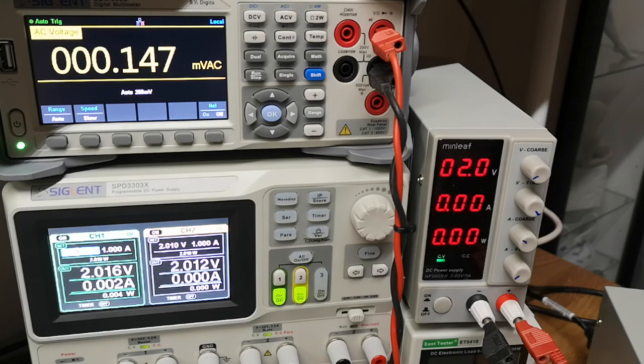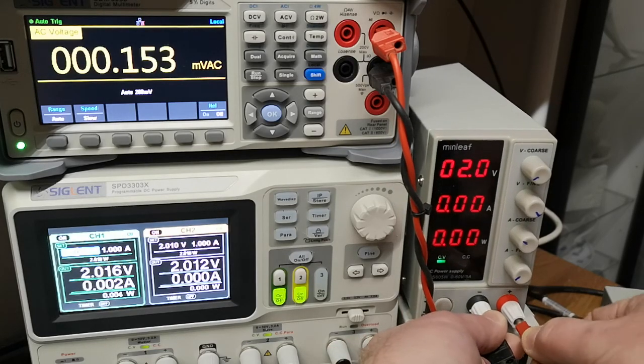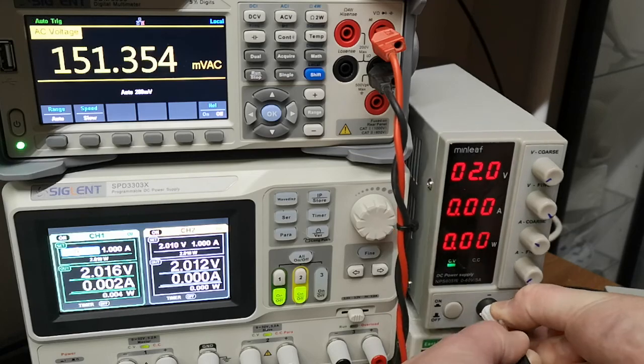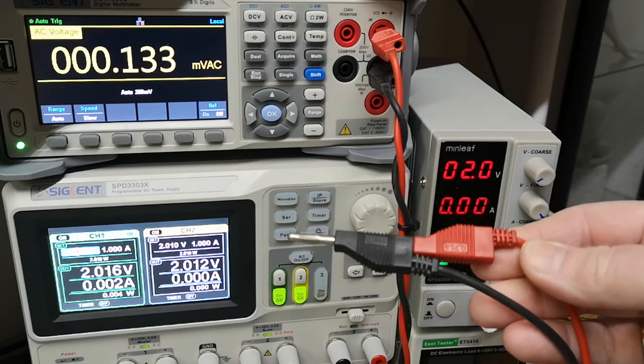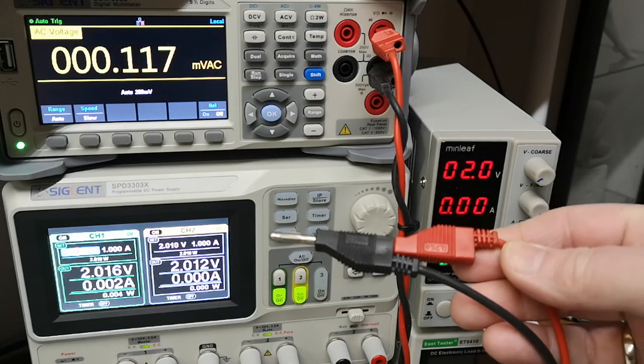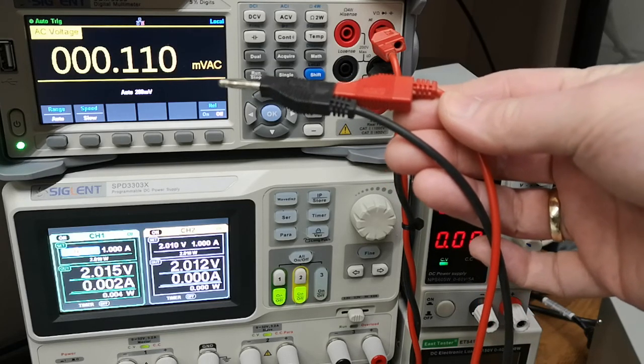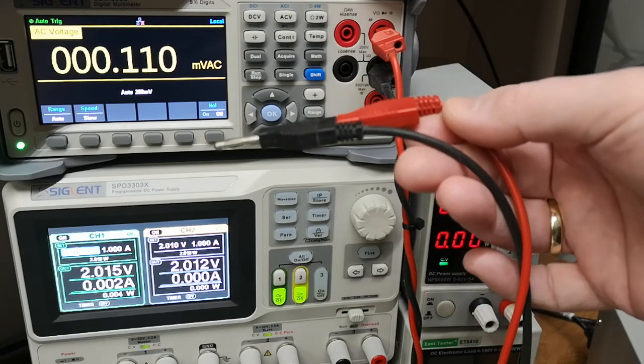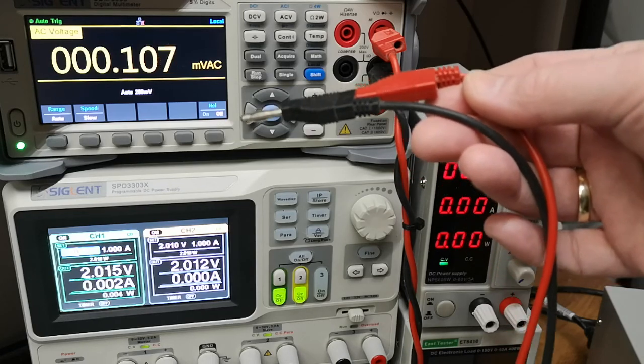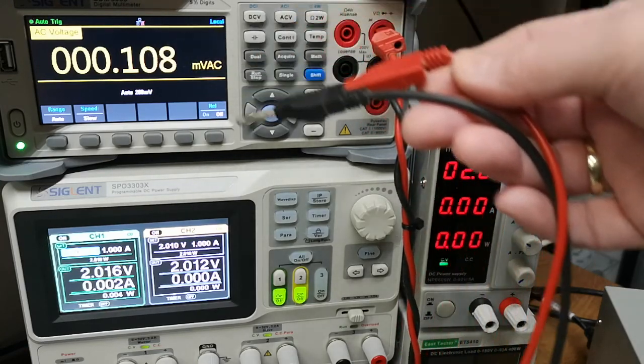Let's try and take the banana plugs and short them. See, it's a little bit less and a little bit more stable. So this is the noise, the internal noise in the amplifiers and ADC circuits inside the multimeter.